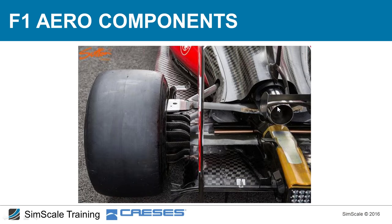We can also see the exhaust pipe. Under the old regulations, it was mounted from the sides, and teams could use the exhaust air to inject between the rear tire and diffuser to seal that region. With current regulations, the exhaust is now positioned in the middle, so it can no longer be used to seal the sides of the diffuser.